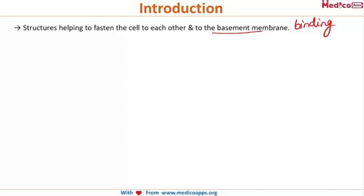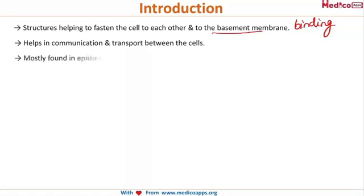Their function is to help in communication and transport of various substances between the cells, and they are most frequently found in epithelial cells. There are three types of junctions.